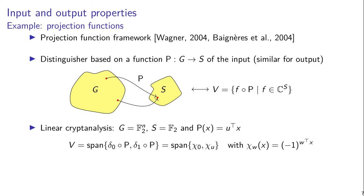And if we add up those two basis functions and subtract them, we get a new basis consisting of the functions chi_0 and chi_u. So this is what this V looks like for linear cryptanalysis.